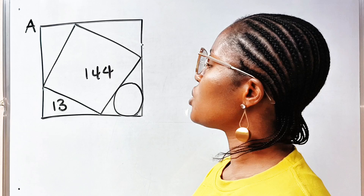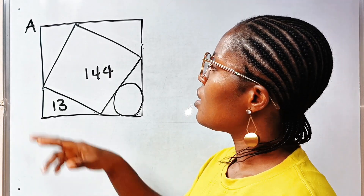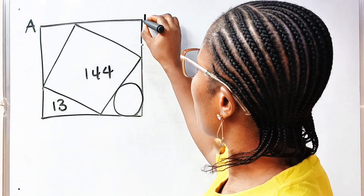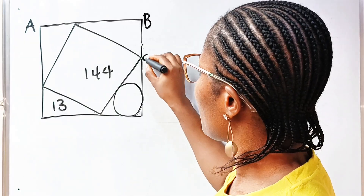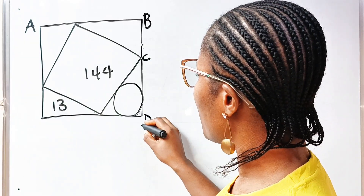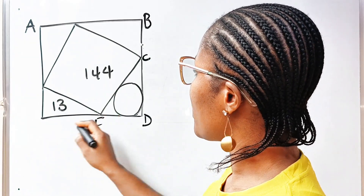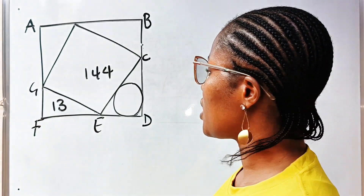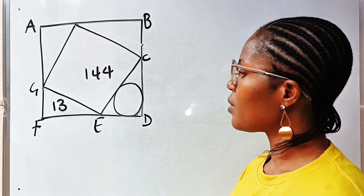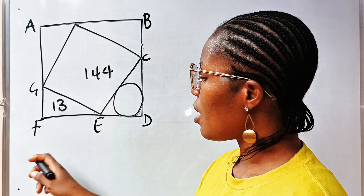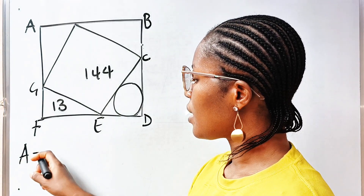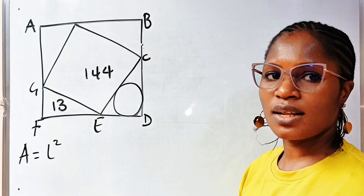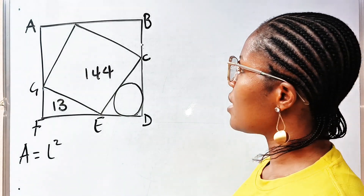Let's add additional information to this. Let's call this point A, point B, point C, point D, point E, point F, and point G. Now, the area of a square is length squared.